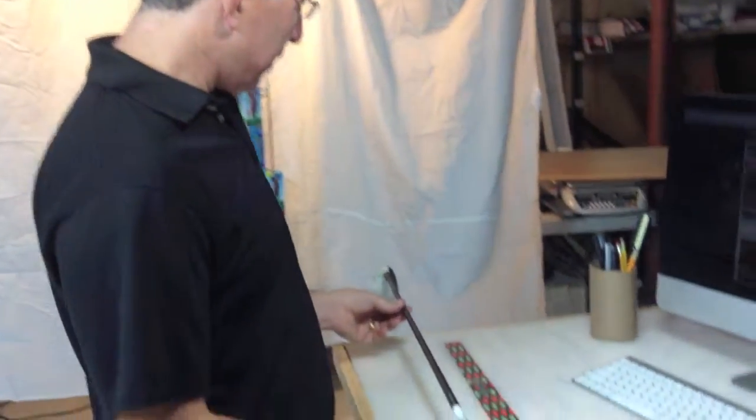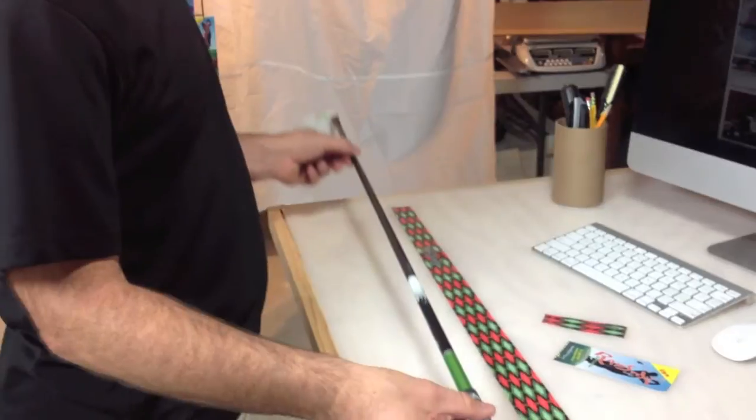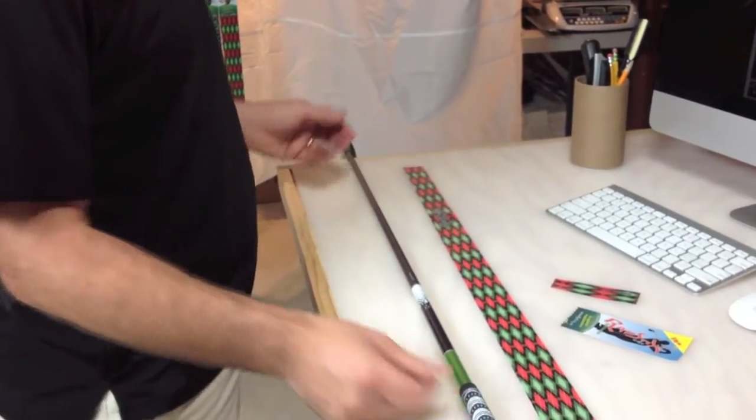But here we go. Start by putting the golf club down on a flat surface with the head off to your left, right off the end of the table.